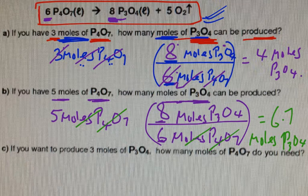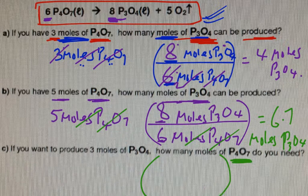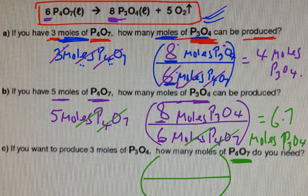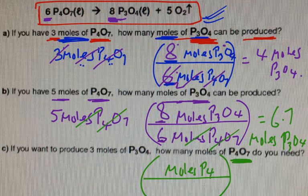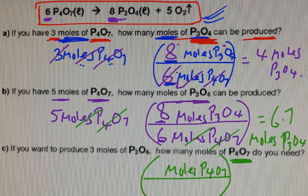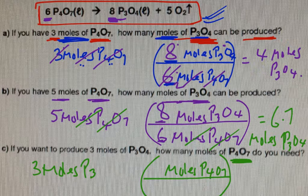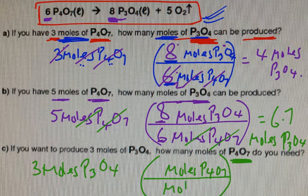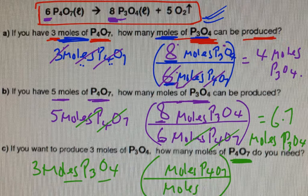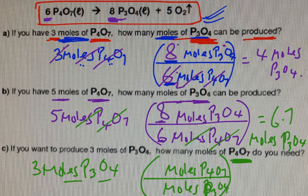Next one. You are trying to find how many moles of P₄O₇ this time. So once again, it's the same principle. You put your parentheses. You put your dividing line. You're looking for moles of P₄O₇. You're given 3 moles of P₃O₄. So what happens next? You put moles of the same thing, moles of P₃O₄ in the bottom.